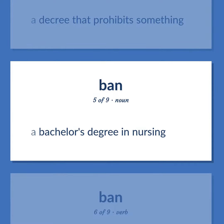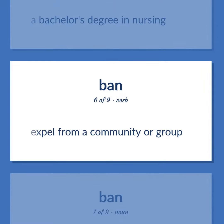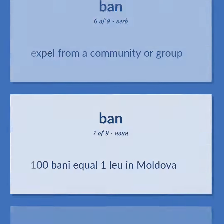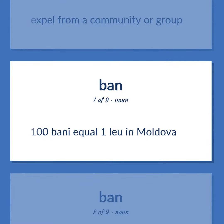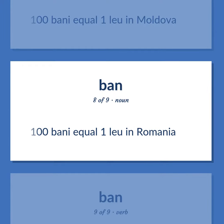A bachelor's degree in nursing. Expel from a community or group. 100 bani equal 1 leu in Moldova. 100 bani equal 1 leu in Romania.